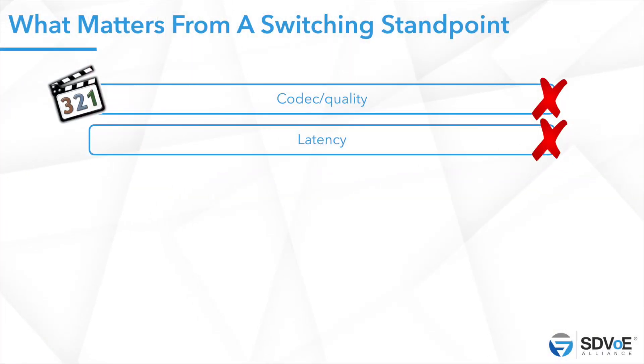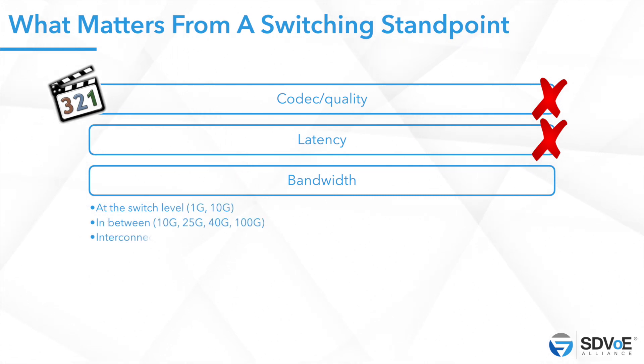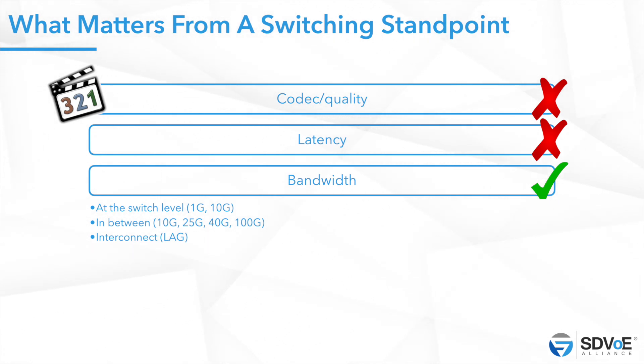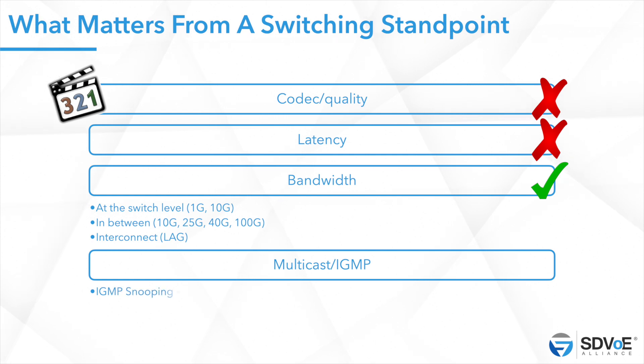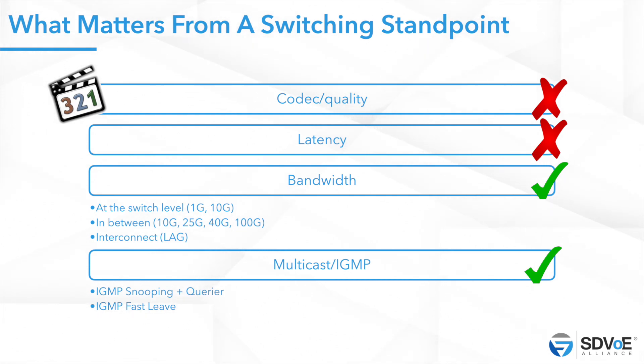What remains important is bandwidth. As shown with those red lines, you need to calibrate your network: select the right speeds at access — 1G compressed or 10G uncompressed — and size your backbone, core, and all interconnects properly. Last but not least, multicast is critical. 99.9% of AV implementations are based on multicasting, so you must require IGMP at layer two at minimum. The three components to check: IGMP querier, IGMP snooping, and IGMP fast leave.